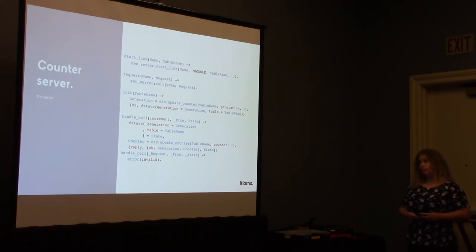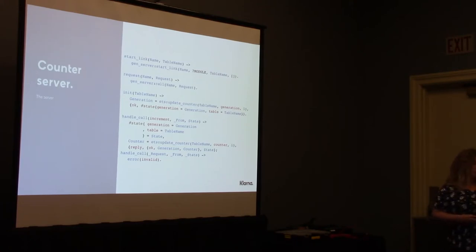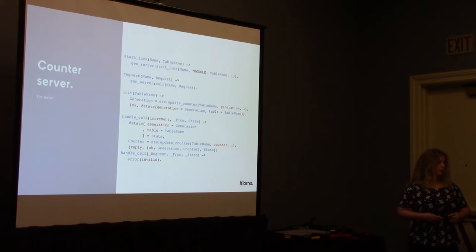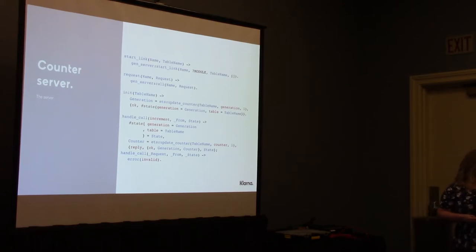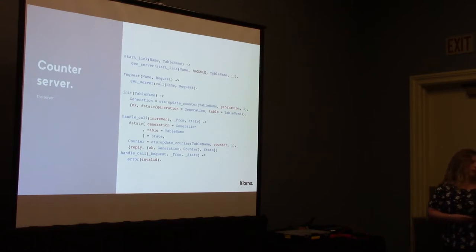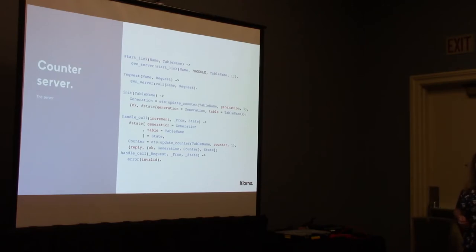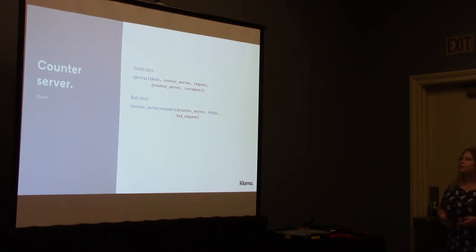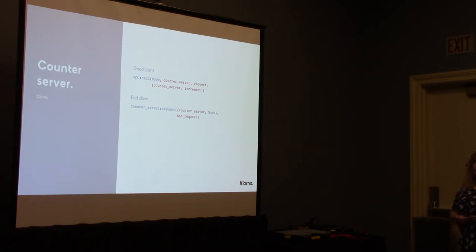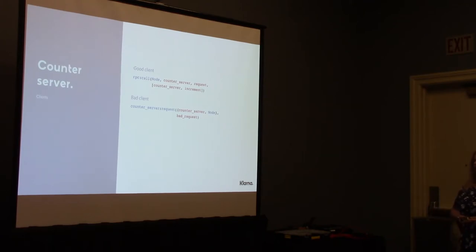The server is a gen_server. It registers itself under the name passed by the supervisor, saves the ETS table reference, and implements one API function — the increment request. If an increment is requested, it's handled in the handle_call callback: it updates the counter and replies with the current state. Every other call towards the server will crash it. Since the clients are on different Erlang nodes, there are two ways to communicate with the server. The good client uses remote procedure calls to the server node, and the bad client uses the distributed Erlang name registry service.